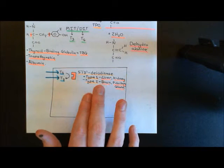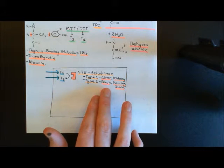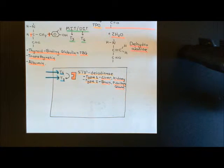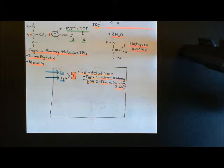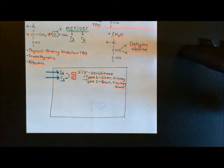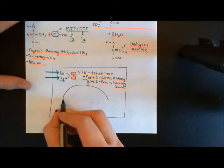To recap: type 1 5'3' deiodinase is majorly found in liver and kidney, and type 2 5'3' deiodinase is found in the brain and very importantly in the pituitary gland. These deiodinase enzymes are going to convert T4 molecules arriving in peripheral cells into T3 molecules. That means we'll end up with more T3 molecules than we would otherwise, and now both the T4 and T3 molecules are going to affect gene expression within the cell by acting on a nuclear receptor.